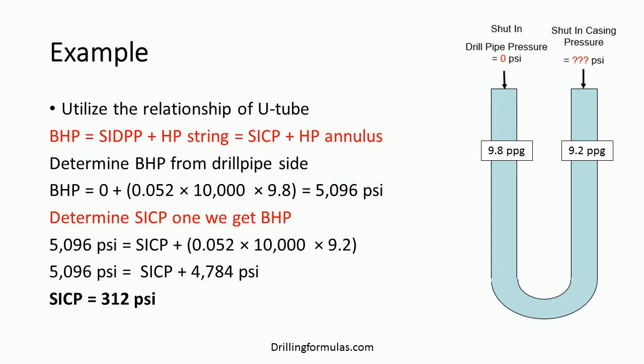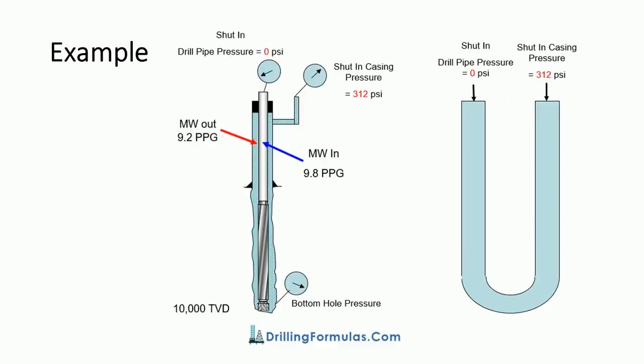Determine shut-in casing pressure from the bottom hole pressure we calculated. Bottom hole pressure equals shut-in casing pressure plus hydrostatic pressure in the annulus. 5,096 psi equals shut-in casing pressure plus hydrostatic pressure in the annulus, which is 0.052 times 10,000 times 9.2. Solving the equation gives a shut-in casing pressure of 312 psi. You will have 312 psi on the casing side when the well is shut in.